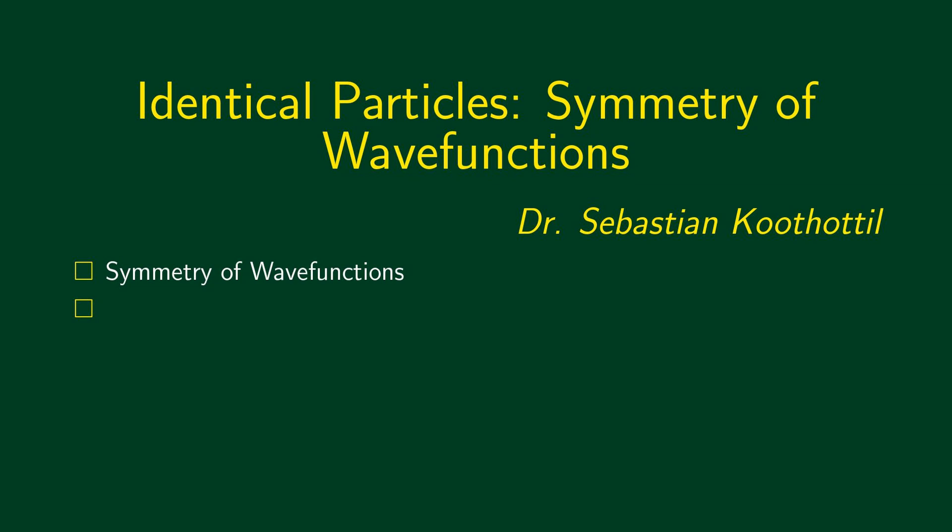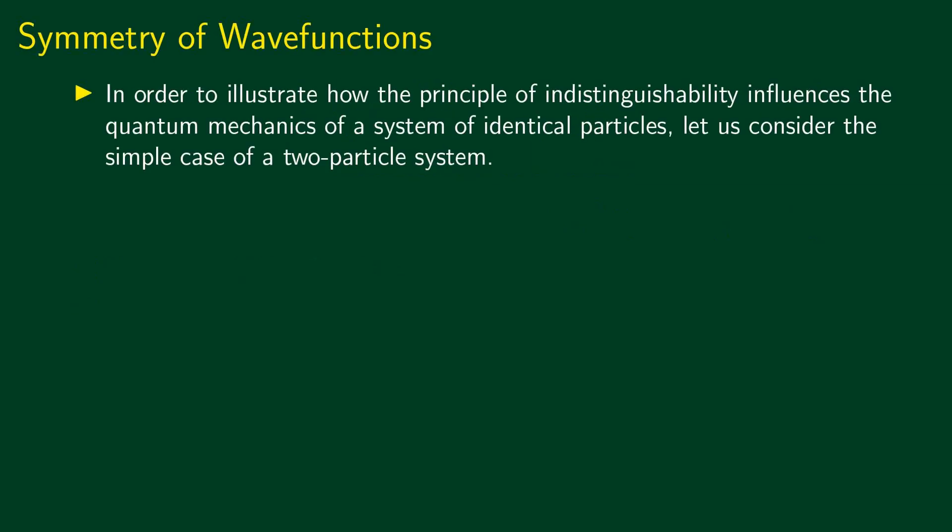In the last class we talked about identity of particles in quantum mechanics and also the indistinguishability principle. In this session we shall discuss symmetry of wave functions. We now want to see how the principle of indistinguishability influences the quantum mechanics of a system of identical particles. For this we shall start with the simple case of a two-particle system.